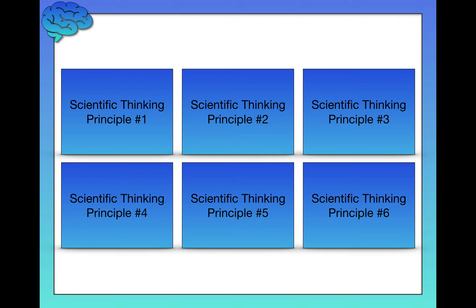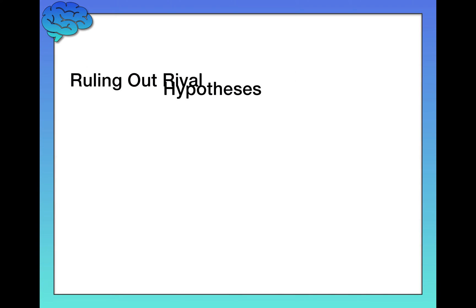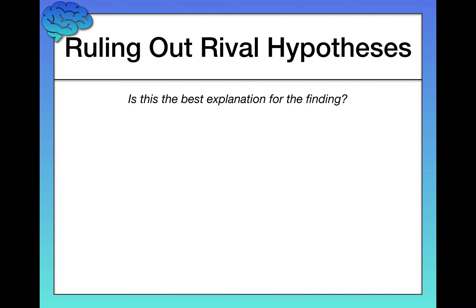Scientific thinking principle number one is ruling out rival hypotheses. This principle asks: is this the best explanation for the finding? Is what I'm seeing or hearing the best explanation, or are there alternative explanations — rival hypotheses — for the results?